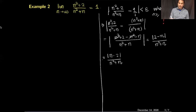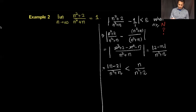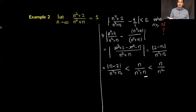Continuing the bound: n/(n²+n) is strictly less than n/n² because removing a positive term from the denominator makes the fraction larger. And n/n² simply equals 1/n. So I've shown the left-hand side is bounded above by 1/n.